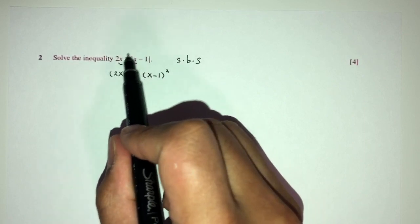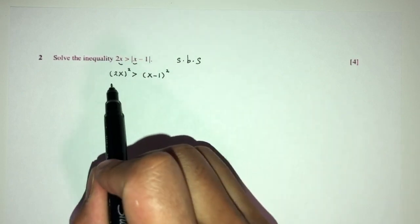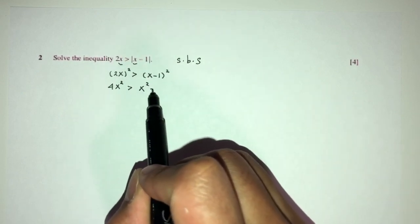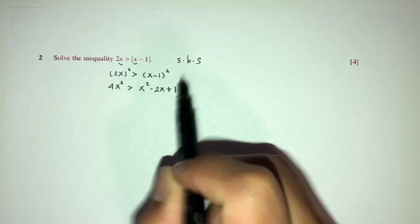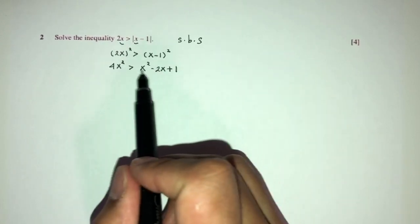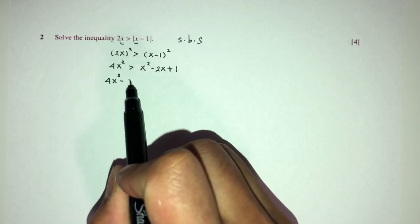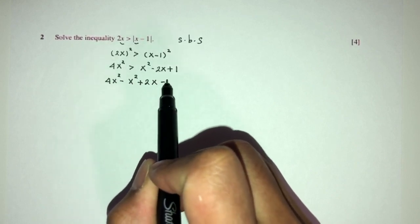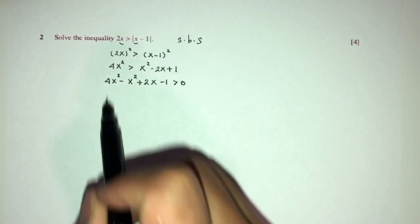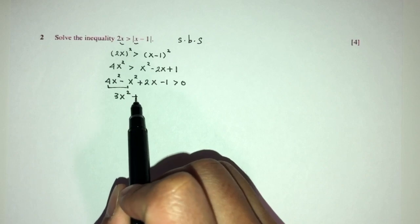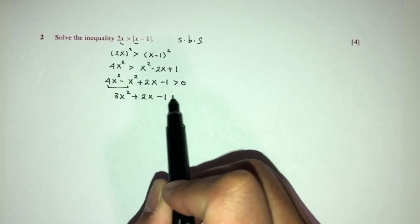When you square this side, the modulus will disappear. You will have 4x square more than x square minus 2x plus 1. We can send everything to one side. You will have 4x square minus x square plus 2x minus 1 is more than 0. Simplify. This will become 3x square plus 2x minus 1 more than 0.